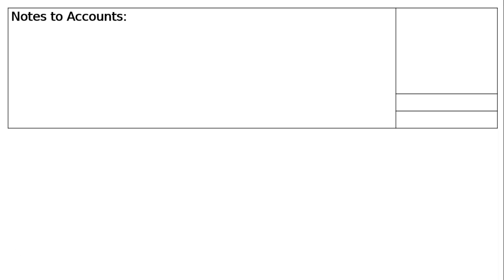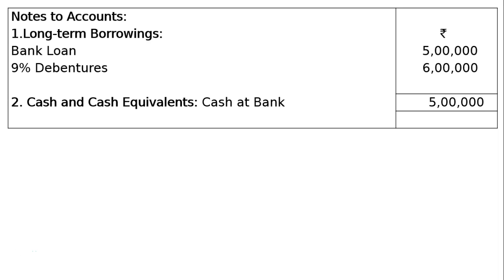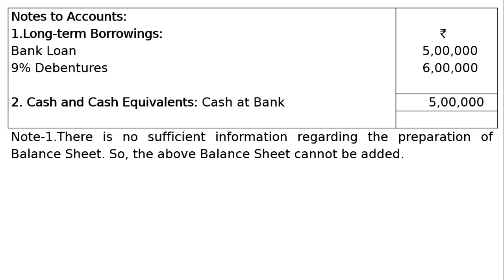The next section is notes to accounts. Note 1 — long-term borrowings: under this head, bank loan Rs. 5 lakhs and 9% debentures Rs. 6 lakhs, total Rs. 11 lakhs. As per available information, that is the bank loan and debentures. There is no sufficient information for full preparation of the balance sheet, so assets and liabilities will remain open. This is only the relevant portion — only items containing an amount are to be retained. This is your final answer.